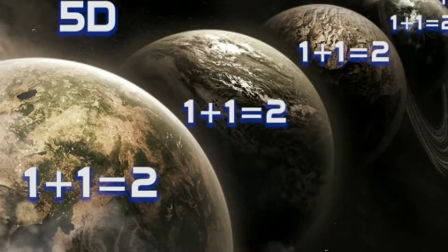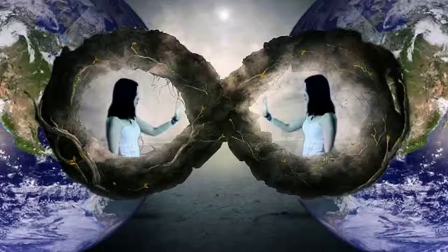If you go to the next dimension — what is the 5th dimension? If you go to the 5th dimension, you can see the parallel universe. The 5th dimension represents the parallel universe, and there are also 4th dimension properties.